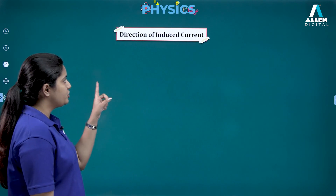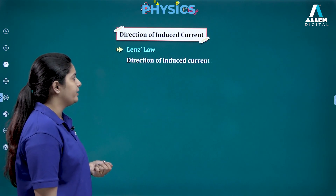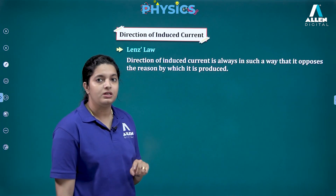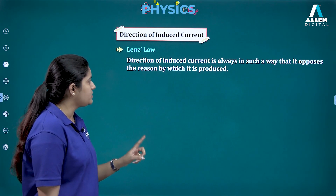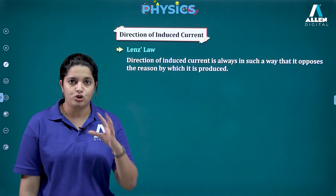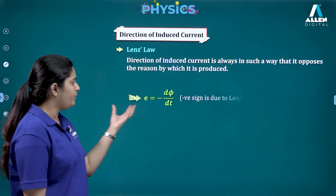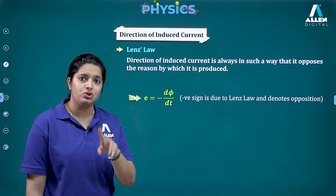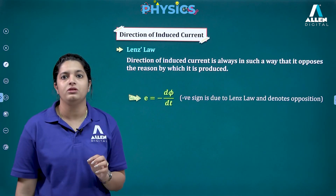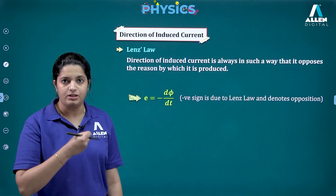The direction of induced current was given by Lenz's law. It states that the direction of induced current is always such that it opposes the cause by which it is produced — that is, the change in flux. Whatever the nature of your change in flux, the induced current opposes it. This adds an additional negative sign to the EMF equation: E = −dφ/dt, which denotes the opposition to the change in flux.